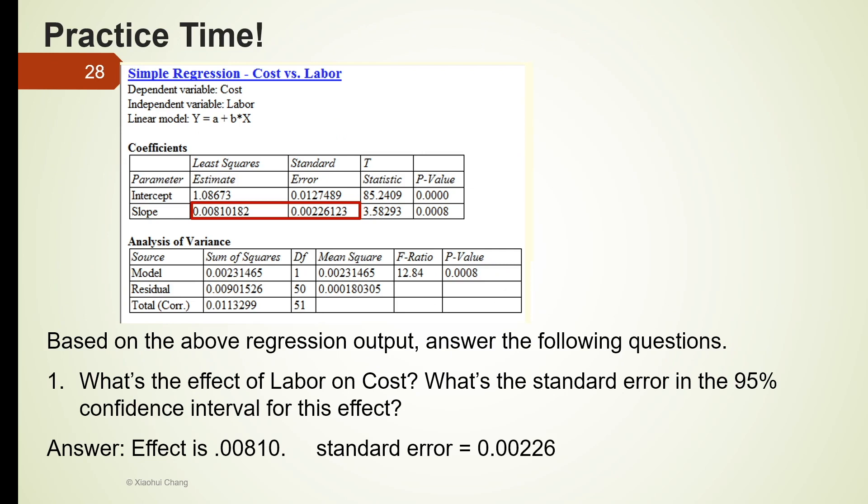Let's work on the practice question together. What we have here is a coefficient table and also an ANOVA table, which we're going to talk about later. Based on the above regression output, answer the following questions. The first one is, what's the effect of labor on cost? As we can see, labor is the independent variable, that is the x, and the cost is the dependent variable. So what's the effect of labor on cost? This question asks for the slope estimate. So slope is estimated to be 0.008. So the effect is 0.00810.